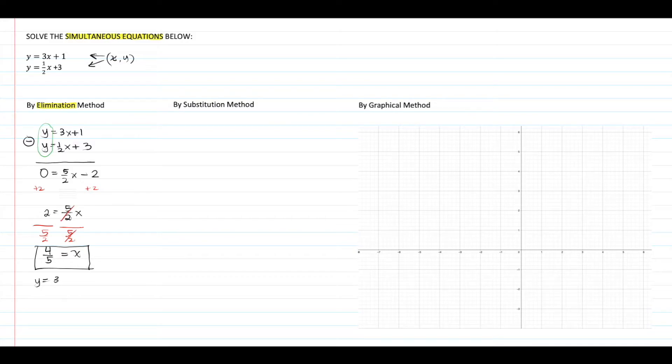To find the value of y, we can use this x value and input this into one of the two equations given. Let's choose the easy one. So y is equal to 3 times the value of x, which is 4/5, plus 1. Hence y is 17/5 or 3.4.